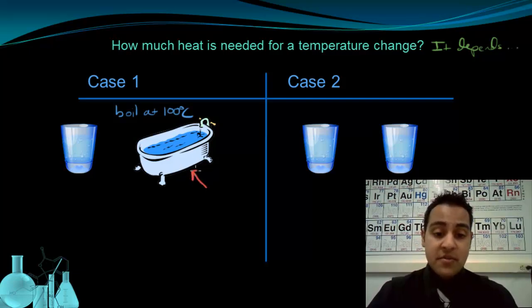Most people would immediately choose the bathtub, because intuitively that makes sense, that I would need to add more heat to the bathtub full of water to get it to start boiling than I would to a cup of water. So why would someone pick the bathtub as the one that would take more heat to bring to boiling? Well, it's because we all know there's more water in the bathtub.